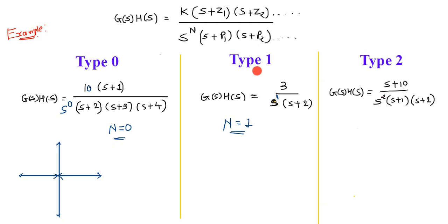So this is a type 1 system because the power of S is 1.